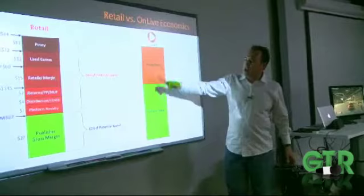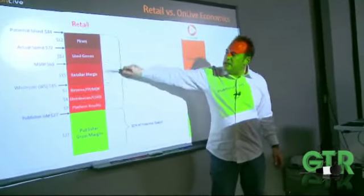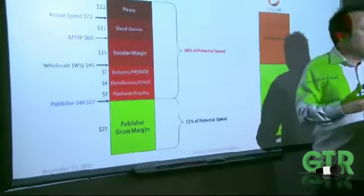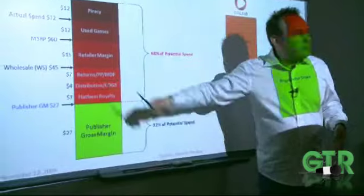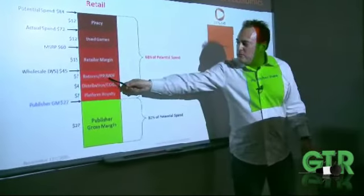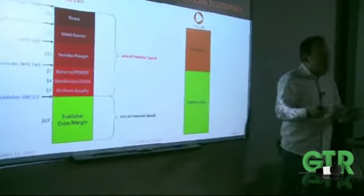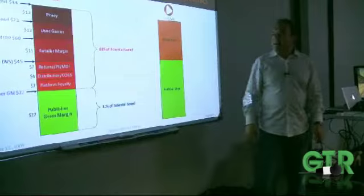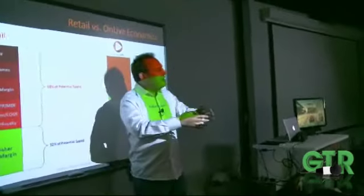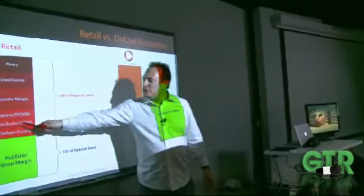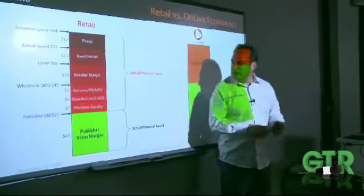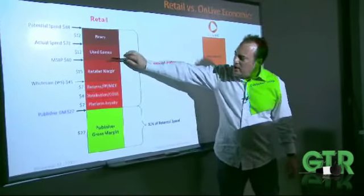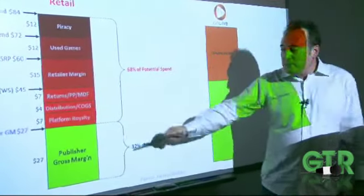The way we pulled it off is by showing publishers this slide. A video game that sells for $60: the retailer like Best Buy gets $15 for their margin, then the publisher has to allocate for returns — publishers take games back for price protection, and if they lower the price the publisher pays the retail store. Then there's marketing development funds (MDF) — that flyer in the Sunday newspaper. Then there's distribution and cost of goods sold (COGS) — the cost of those DVDs, about $4 — and then a platform royalty to Sony, Nintendo, or Microsoft.